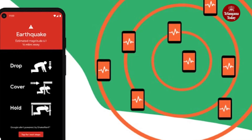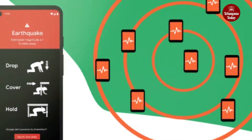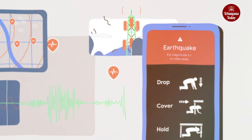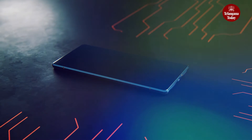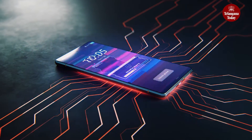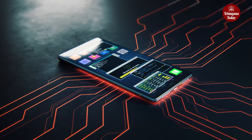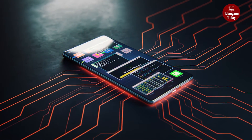Following this detection, Google's server swiftly sends out alerts to nearby phones. These alerts come in two categories based on the earthquake's magnitude. First, there is the Be Aware alert, sent to users experiencing MMI 3 and 4 shaking during an earthquake with a magnitude of 4.5 or higher. Then there's the Take Action alert, meant for users experiencing MMI 5 plus shaking during a similarly strong earthquake.